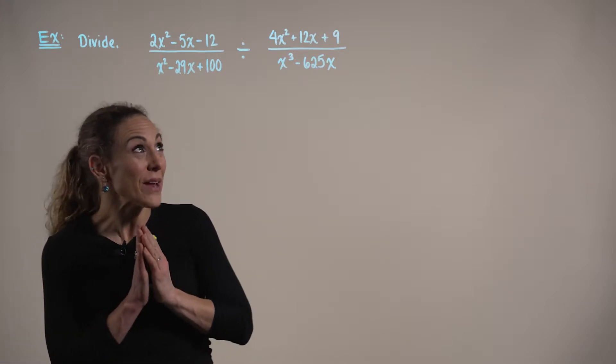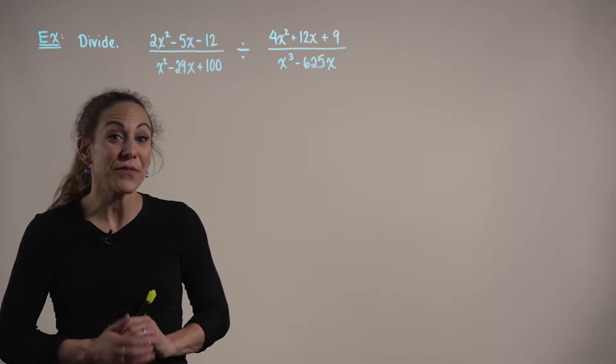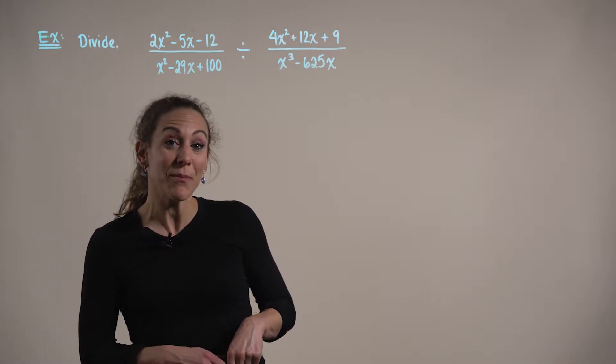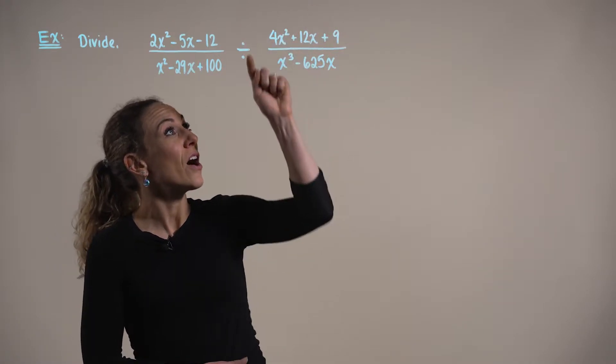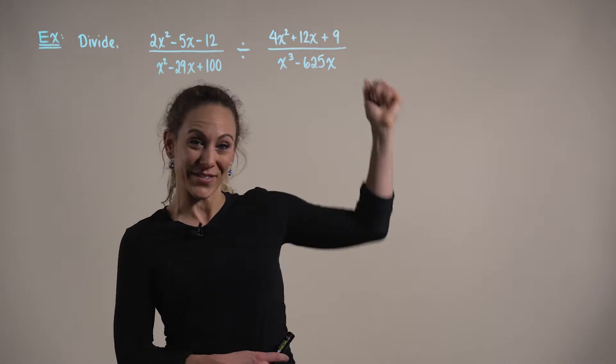Now, when we are working with division with rational expressions, the first thing that we want to do is multiply by the reciprocal of the denominator. So, in other words, we are going to flip this rational expression.